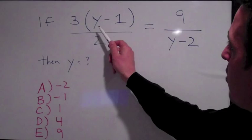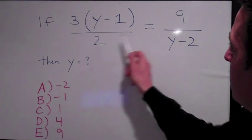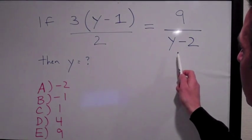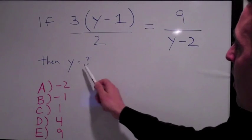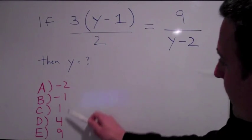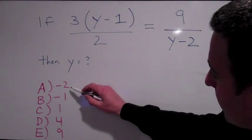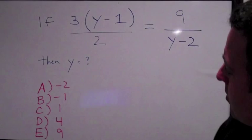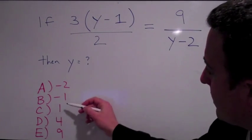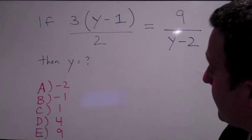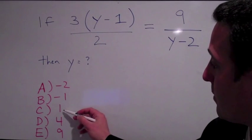So if 3 times quantity y minus 1 over 2 equals 9 over y minus 2, then y equals what? And here are the answer choices. So when you back solve, you notice the numbers are going in increasing order from A to E. So you want to start with answer choice C because it's in the middle. Plus, it's a relatively easy number to back solve.